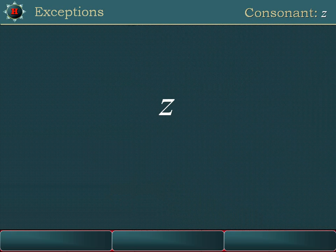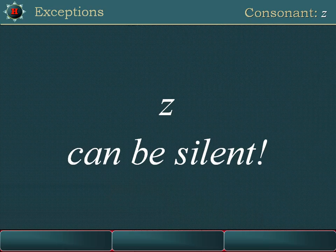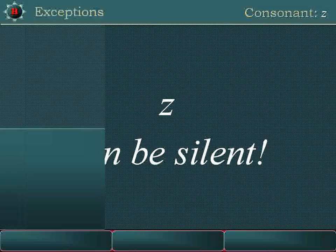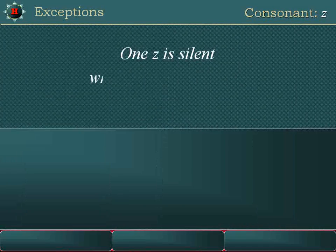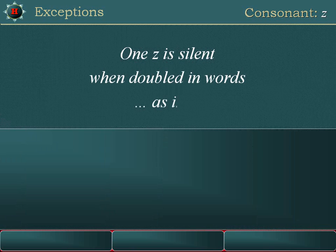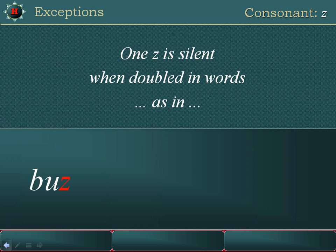Z has one sound — /z/. Consonant Z can be silent. One Z is silent when it is doubled in words, as in buzz, fizz, and fuzz.